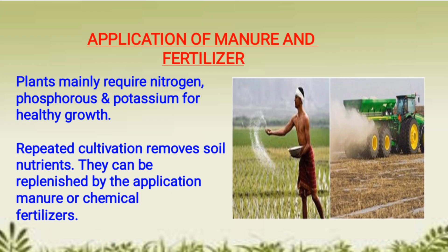Repeated cultivation removes soil nutrients and the soil becomes deficient in important nutrients. These nutrients can be replenished by the application of manure and chemical fertilizers. Here in the picture you are seeing a person spraying fertilizers manually, and in the second picture it is being sprayed by a tractor.